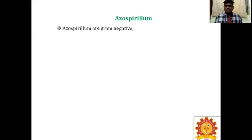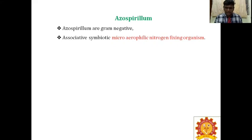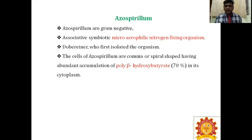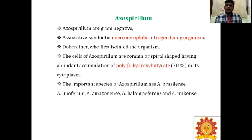The next biofertilizer is associative symbiotic biofertilizer — Azospirillum. Azospirillum are gram-negative, associative symbiotic, microaerophilic nitrogen-fixing organisms. Microaerophilic means it requires very low amounts of oxygen for growth. Döbereiner first isolated this organism. The cells are spiral-shaped, with abundant accumulation of poly-beta-hydroxybutyrate — 70% in its cytoplasm. The important species are Azospirillum brasilense, Azospirillum lipoferum, Azospirillum amazonense, Azospirillum halopraeferens, and Azospirillum irakense. These species are classified based on the place of isolation.